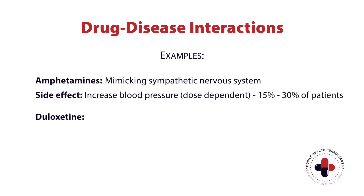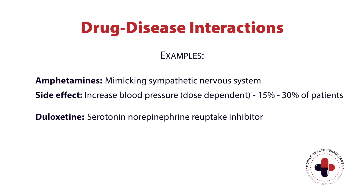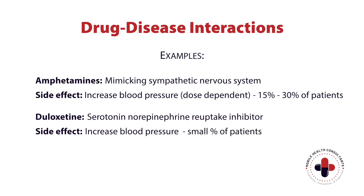Think about something like duloxetine, Cymbalta. Duloxetine is a serotonin-norepinephrine reuptake inhibitor, and the fact that duloxetine has an effect on norepinephrine signaling means that it has the potential to cause high blood pressure as well — though we only see this in a small percentage of patients, with a small bump of two to four millimeters of mercury.